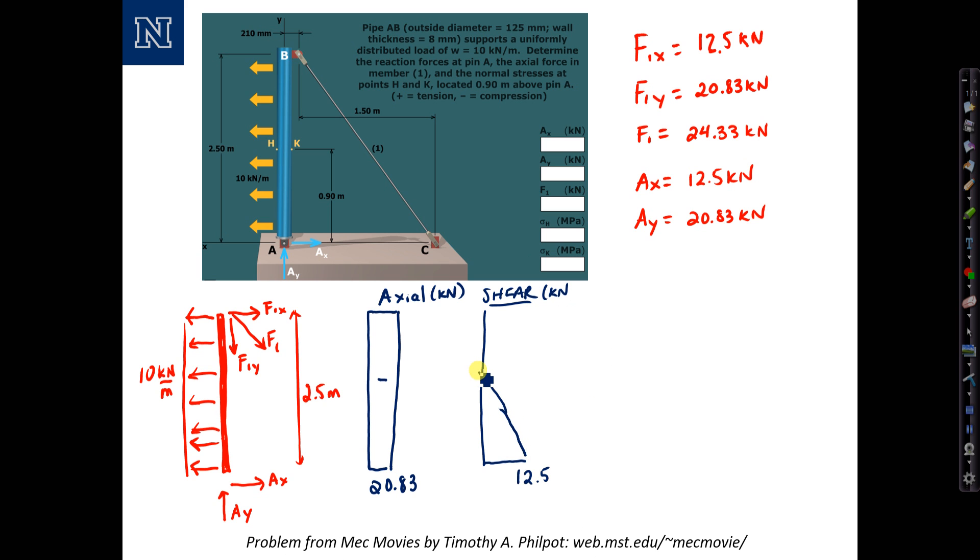The shear is going to decrease to the left, linearly. And the value at the other end 12.5 minus 10 times 2.5 is going to give us negative 12.5 or 12.5 in the other direction. And then according to the reaction it comes back to zero.